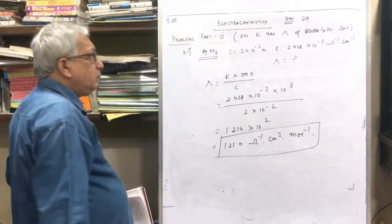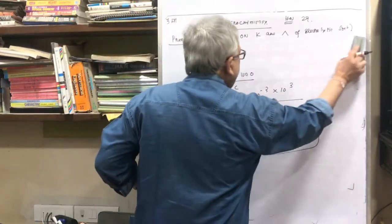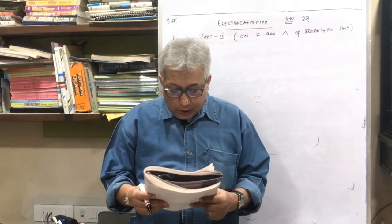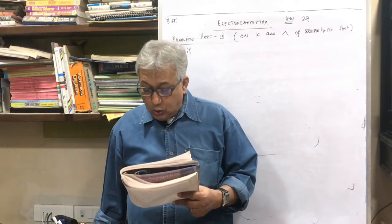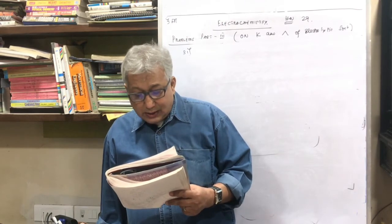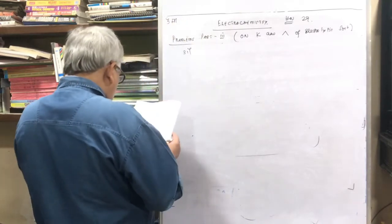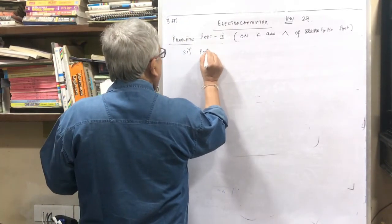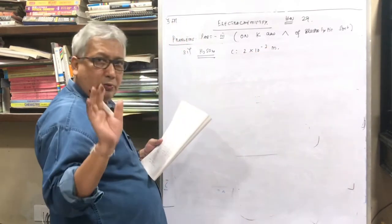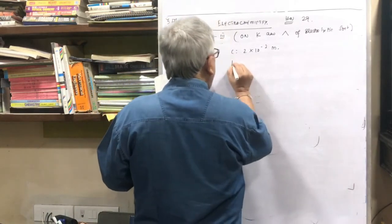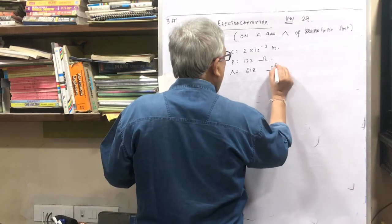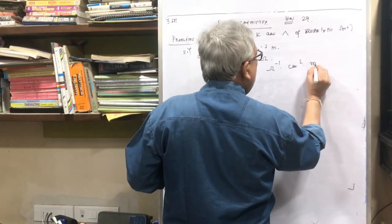Let us go for problem number 32. A conductivity cell filled with 0.02 molar H2SO4 gives at 25°C a resistance of 122 ohm. If the molar conductivity of 0.02 molar H2SO4 is 618 ohm inverse centimeter square mole inverse, what is the cell constant? So they have asked me the value of B. Concentration is 2 × 10⁻² molar, R is 122 ohm, lambda is 618 ohm inverse centimeter square mole inverse.